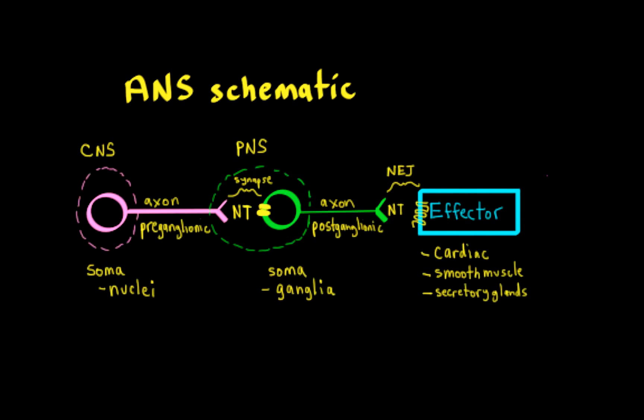Now remember, neurons have some essential parts. They have a cell body or soma, they have an axon, and they have a nerve terminal. And that nerve terminal is going to be releasing neurotransmitters from vesicles onto a receptor. So that's the considerations that we're going to have for these neurons.